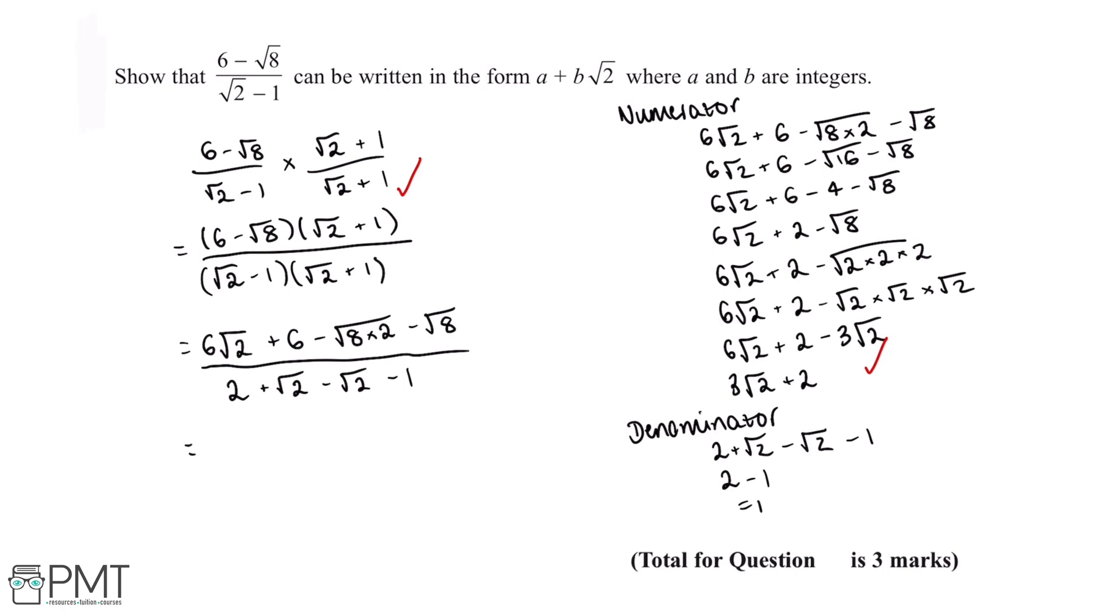So we can rewrite this fraction as (4√2 + 2)/1. And so that it's in the correct form that we want for the answer, we can rewrite this as 2 + 4√2.